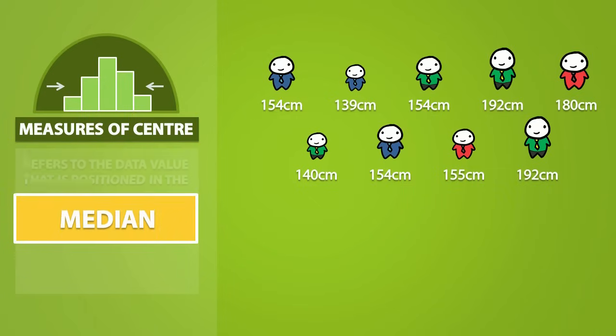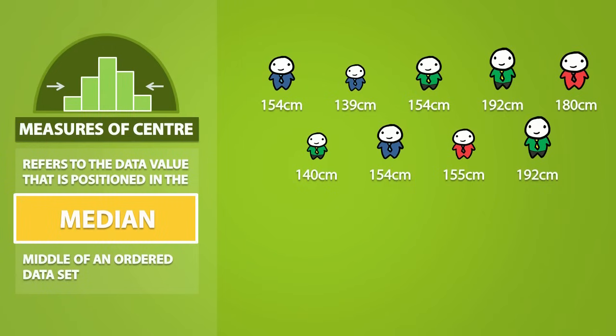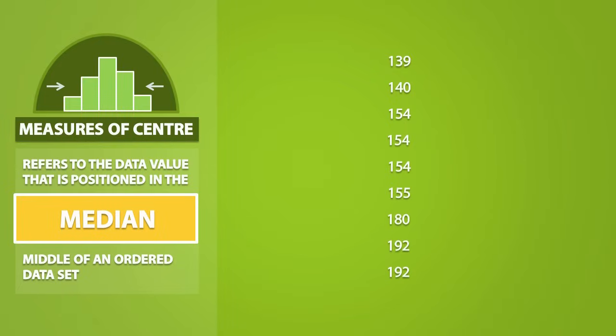Now, the median refers to the data value that is positioned in the middle of an ordered dataset. Students often forget that to find the median, your data must be first put into order. We usually order the dataset from smallest to largest.